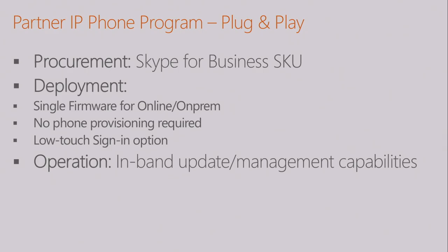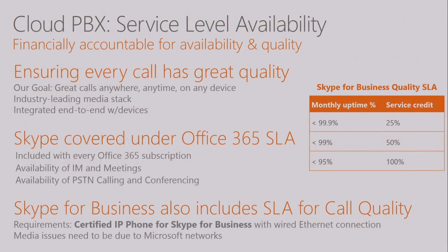We developed a low-touch sign-in option. Previously we had username and password on the phone, which was painful. We had PIN authentication where you had to remember your PIN and extension. And we had pairing, where you connect your phone to your PC to sign in using your client. We wanted something low-touch — I don't need to touch the phone and can sign in remotely if I want. In terms of operation, Skype for Business provides in-band management settings to the tenant. As a tenant admin you manage and change them, and the defaults are set so they just work for most customers.